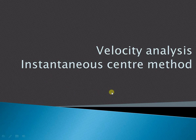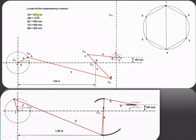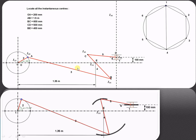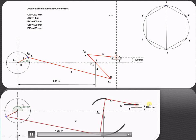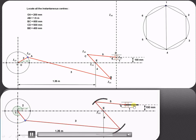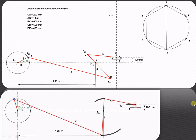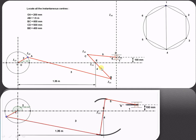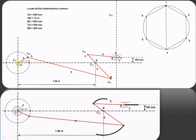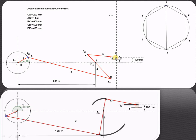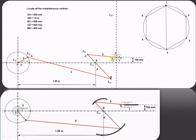Let us understand how to locate the instantaneous center of rotation for a complex mechanism. The dimensions are given, and we have to locate all instantaneous centers of rotation. OA is the crank rotating in a particular direction; as it rotates, the various links oscillate and the piston slides along the path traced by the black line. Link OA is link 2, link AB is link 3, BC is link 4, CD is link 5, and the slider itself is link 6.